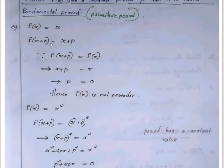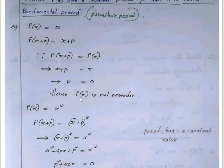For example, f of x equals x. Then f of x plus p equals x plus p equals x implies p equals 0. Since p must be greater than 0, f of x equals x is not periodic.